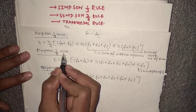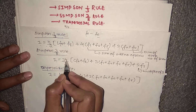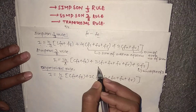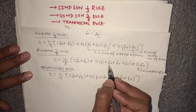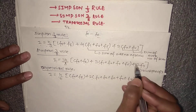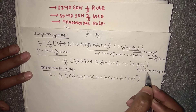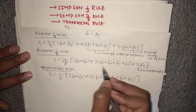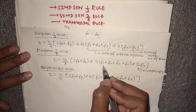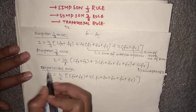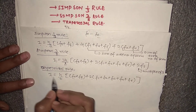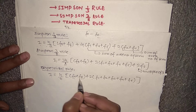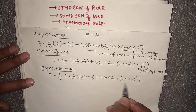In Simpson's 3/8 rule, I equals 3h/8 times the sum of: first term plus last term, plus 3 times (f1 + f2 + f4 + f5), plus 2 times the multiples of 3, plus 3 times the sum of remaining terms. And in the Trapezoidal rule, I equals h/2 times (f0 + f6) plus 2 times the sum of remaining terms.